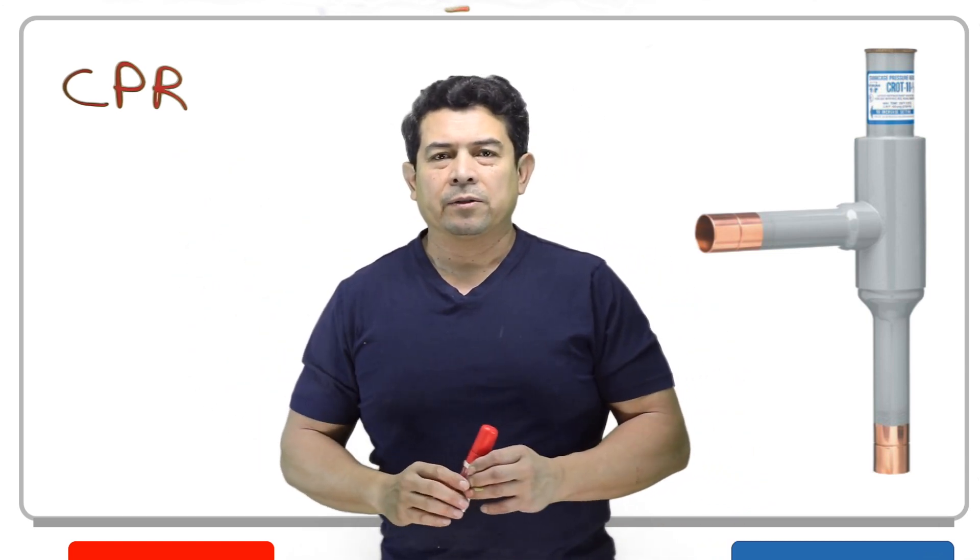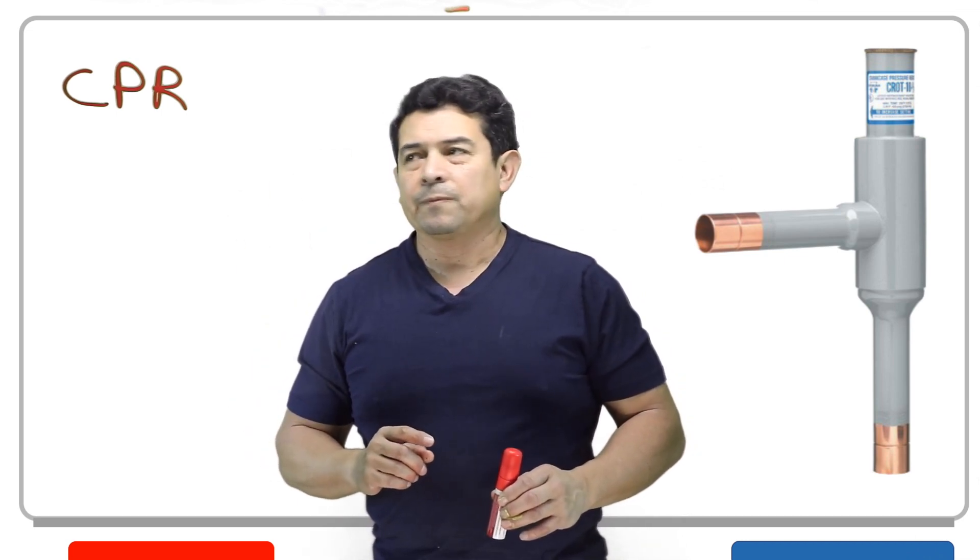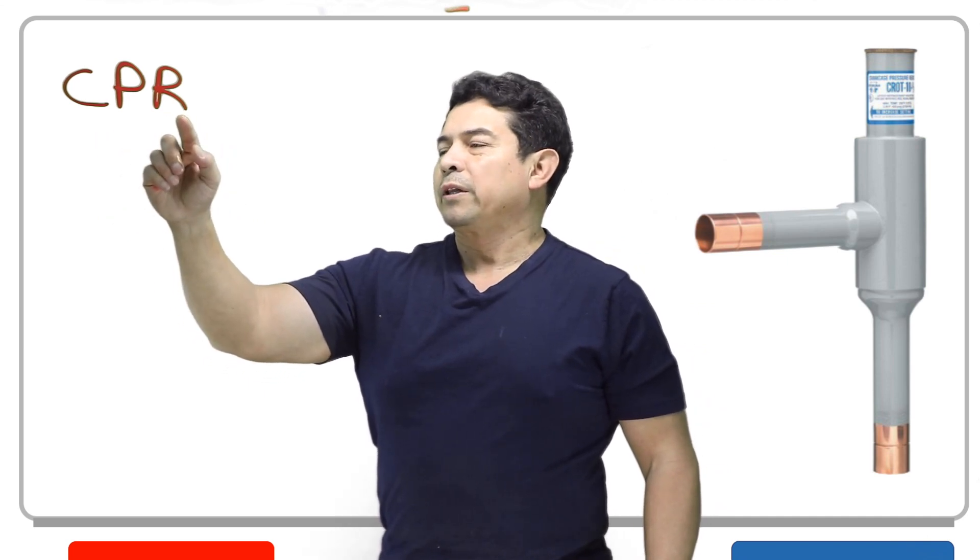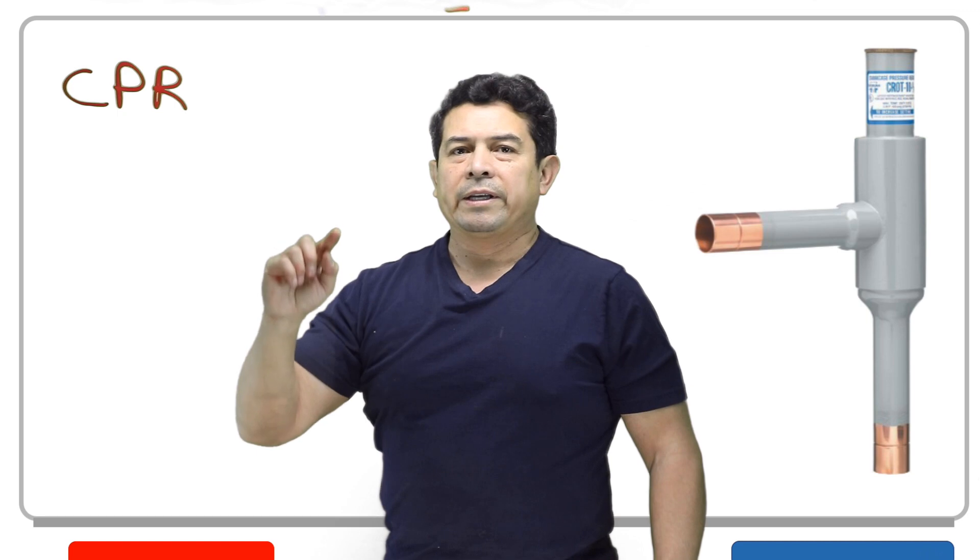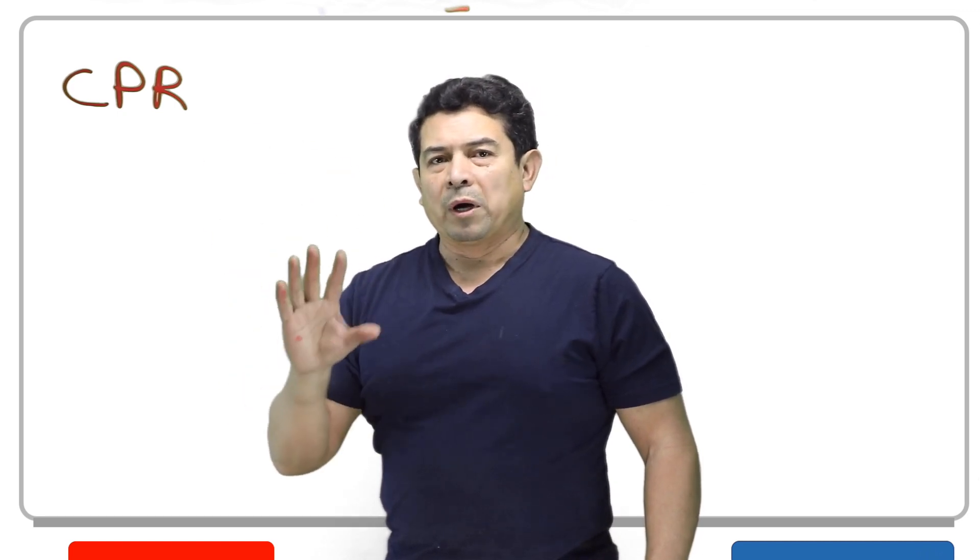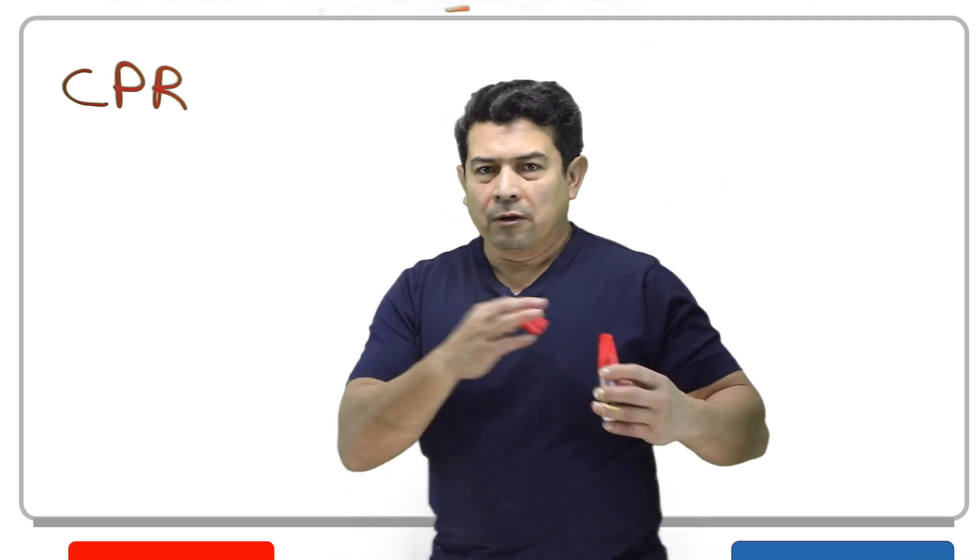Now typically in class, I tell the students, go ahead and just reverse the name, and that will usually tell you what it does. So here we see CPR regulates the pressure of the crankcase, crankcase pressure regulating valve. So we're going to monitor and we're going to regulate the pressure that is in the crankcase of the compressor.